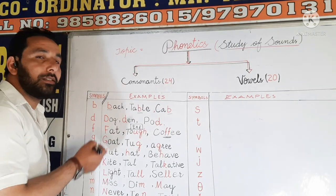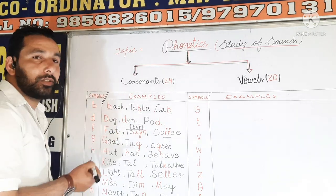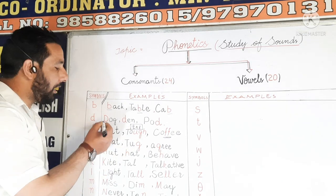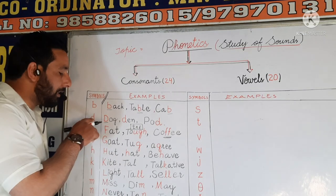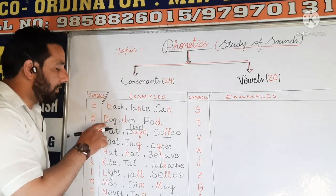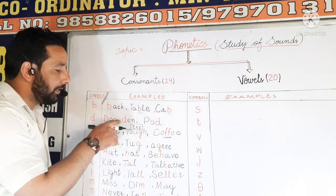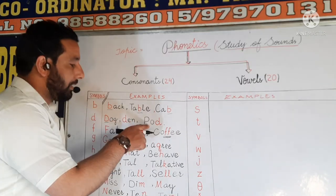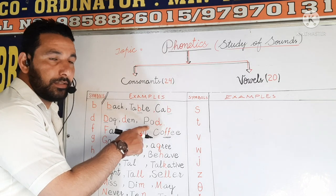And the next consonant is D. Example is 'dog' — the sound we have here is the sound of this consonant symbol D. Next example we have is 'den'. Next is 'pod' — the sound we have here is the phonetic consonant symbol D.